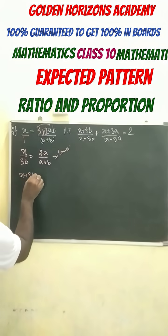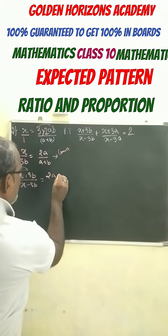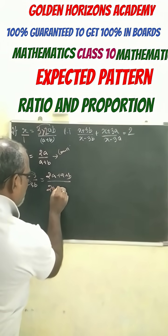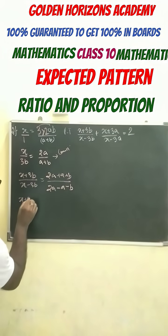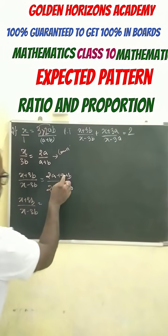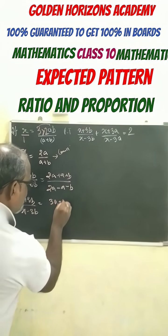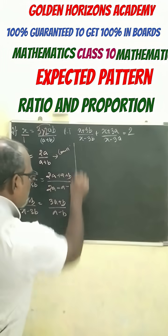We get x plus 3b by x minus 3b equals 2a plus a plus b by 2a minus a minus b. So this becomes x plus 3b by x minus 3b equals 3a plus b and here we get a minus b. Similarly,